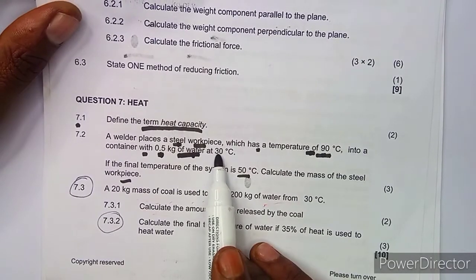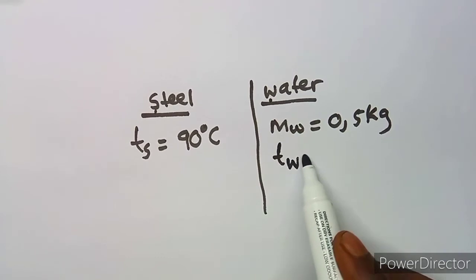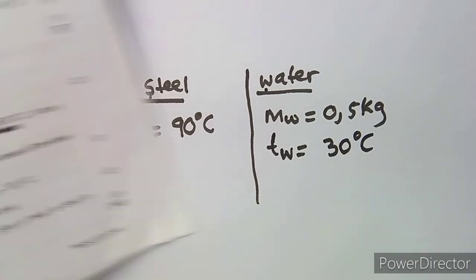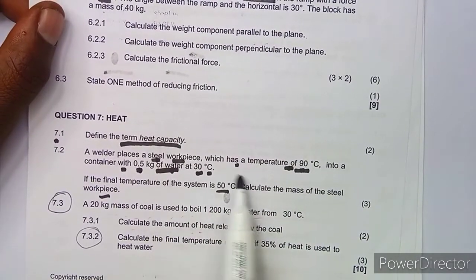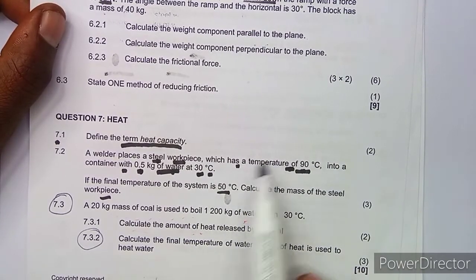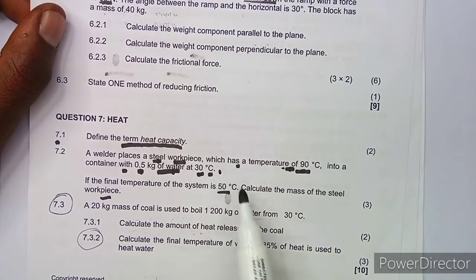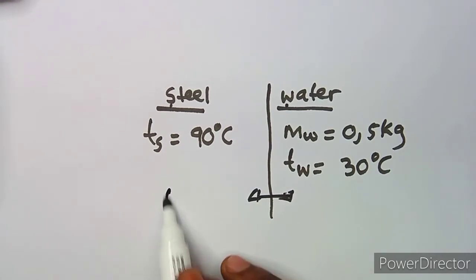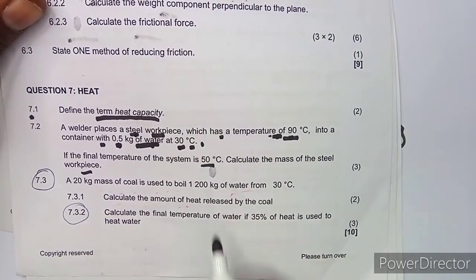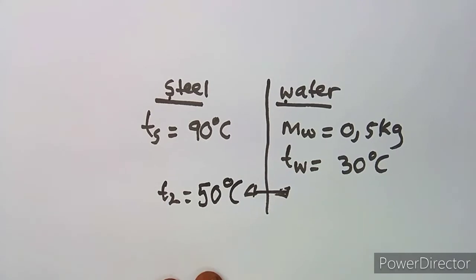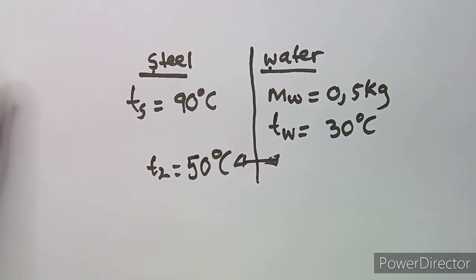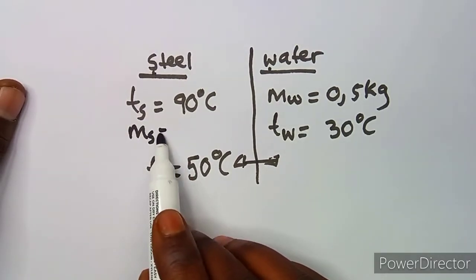The temperature of water at that moment is 30 degrees Celsius. The final temperature of the system — shared between the two — is T2, which is 50 degrees Celsius. We need to calculate the mass of steel, which I'll write as ms. That is the unknown we need to find for question 7.2.